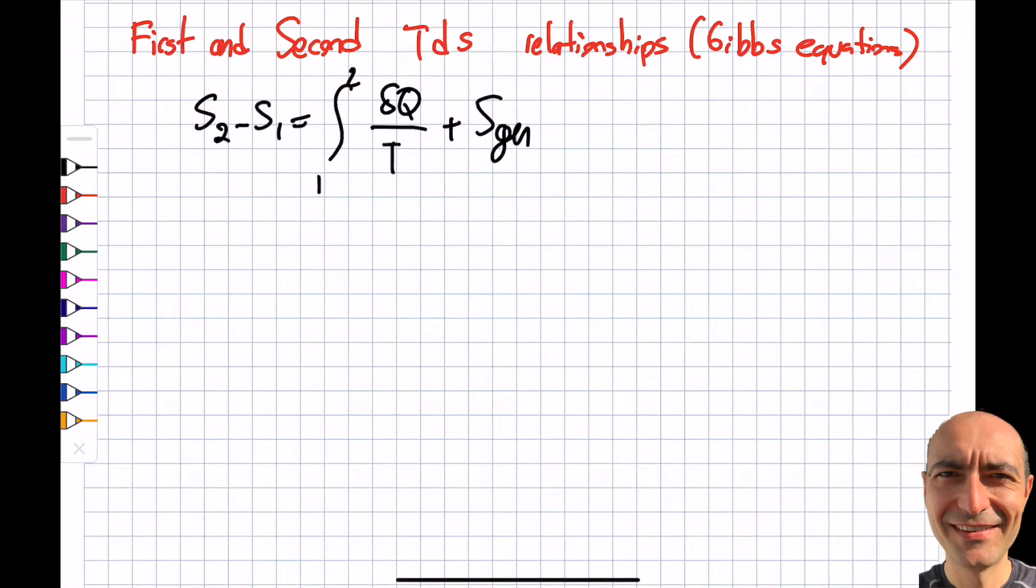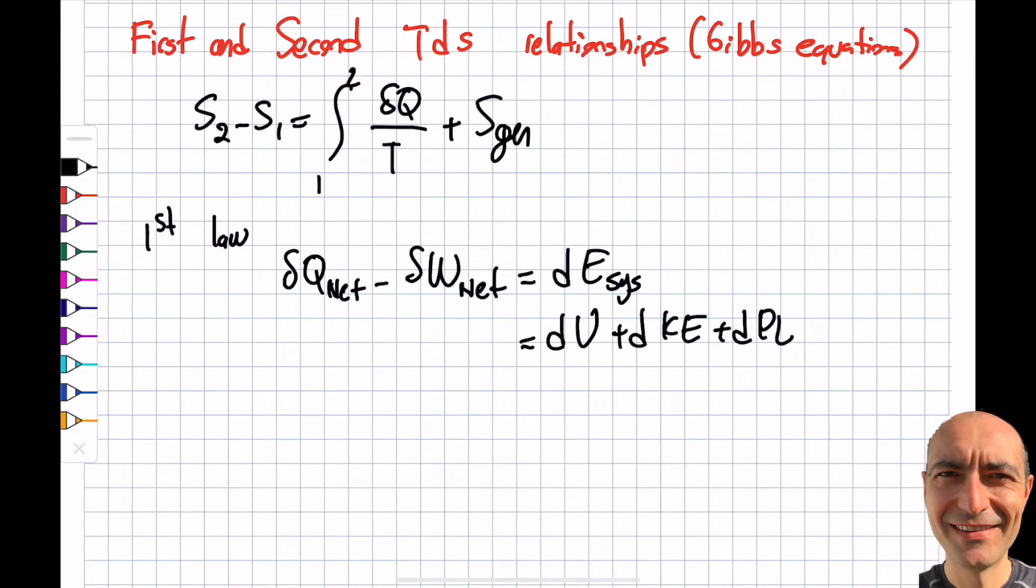I also want to write the first law applied for a process that goes from one to two. Wnet will be equal to ΔE of the system, and this ΔE we write as the capital U plus the kinetic energy plus the potential energy. Depending on the situation, I may have the kinetic energy and potential energy negligible. Let's say I have a closed system and it's a stationary system—these two will vanish, so I'll simply get a ΔU.